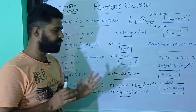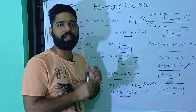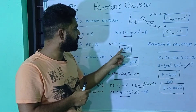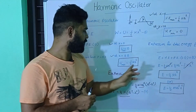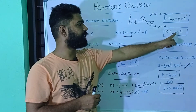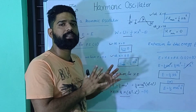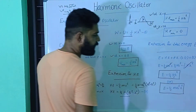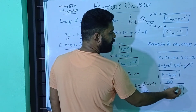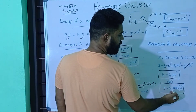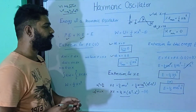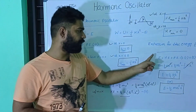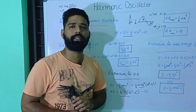The total energy is conserved and constant. If x equals 0: total energy equals 0 plus 1/2 kA², so total energy is 1/2 kA². If x equals a: total energy equals 1/2 kA² plus 0, which is again 1/2 kA². We can also substitute k equals m ω₀², so total energy E equals 1/2 m ω₀² A². This is the energy of the harmonic oscillator.